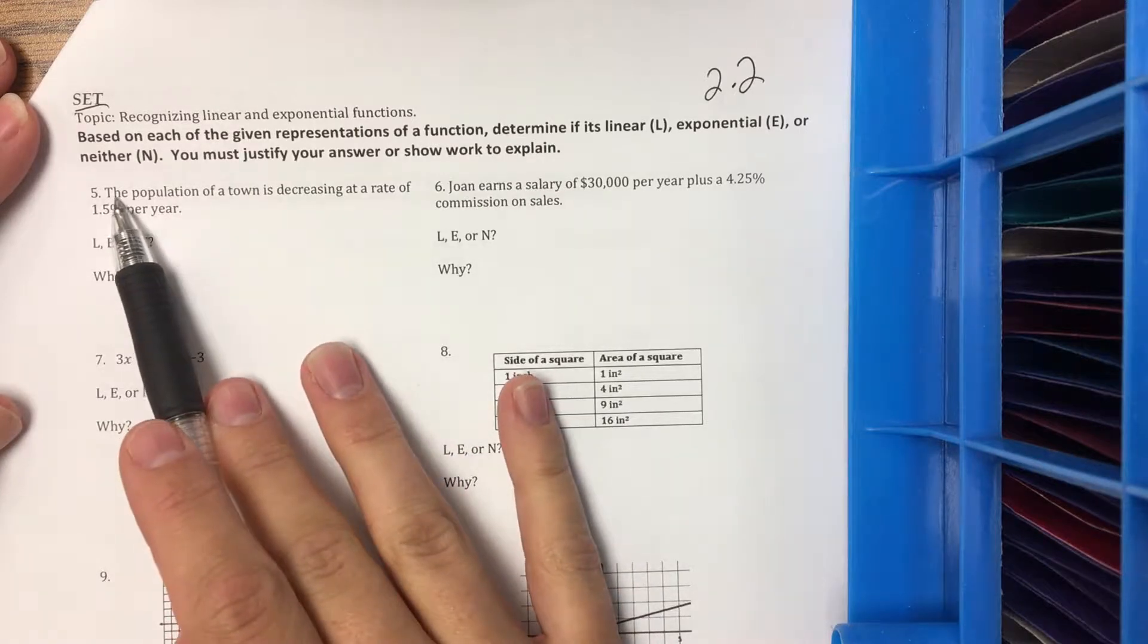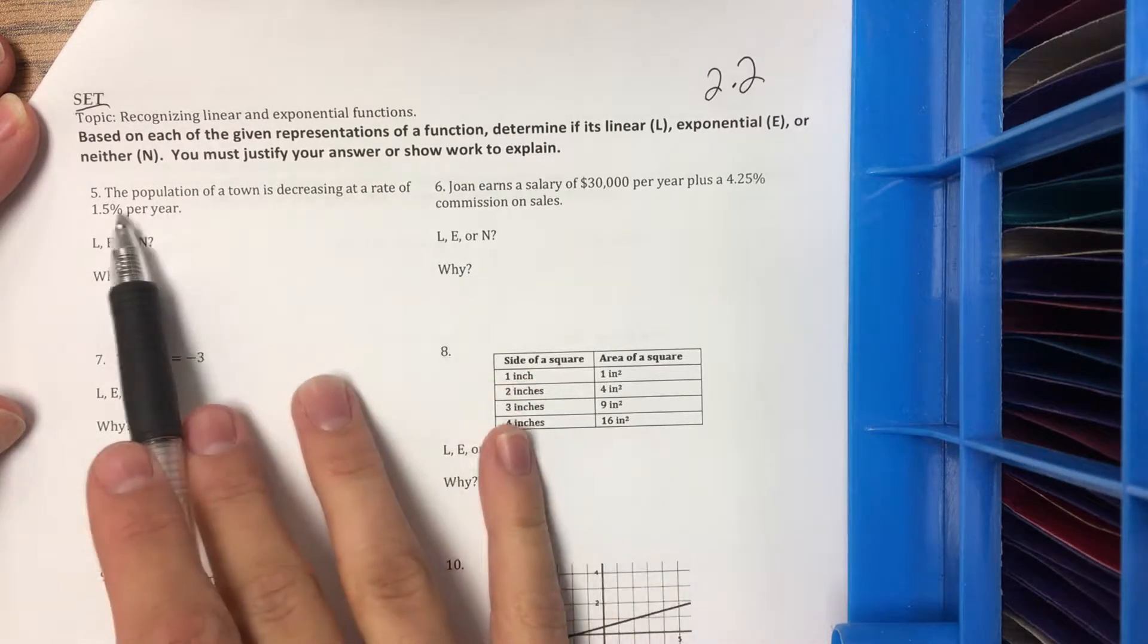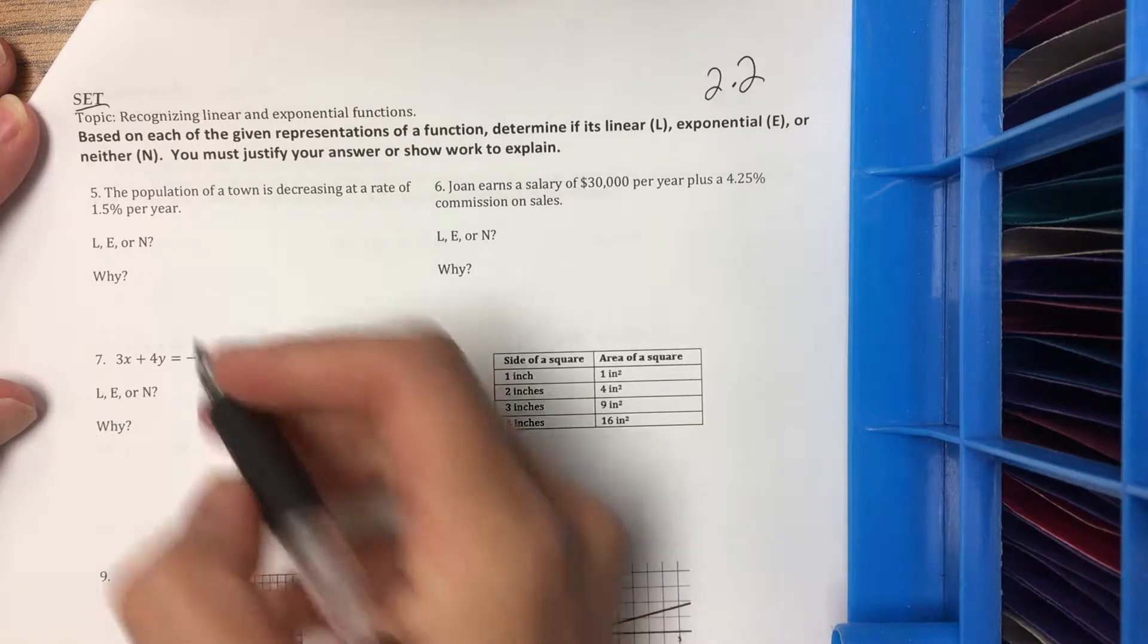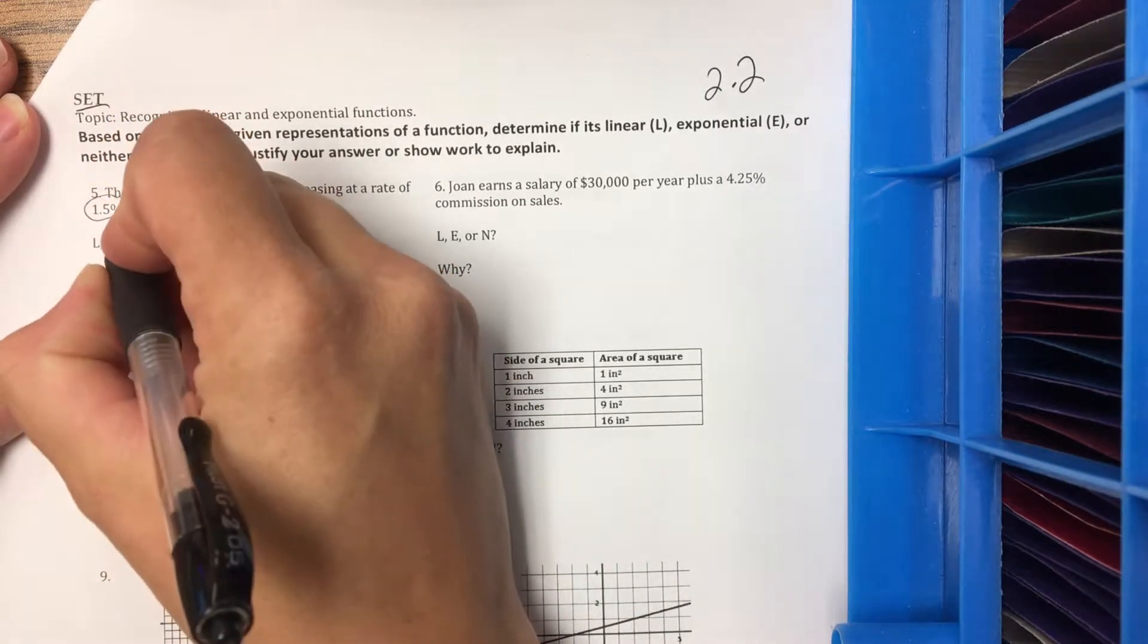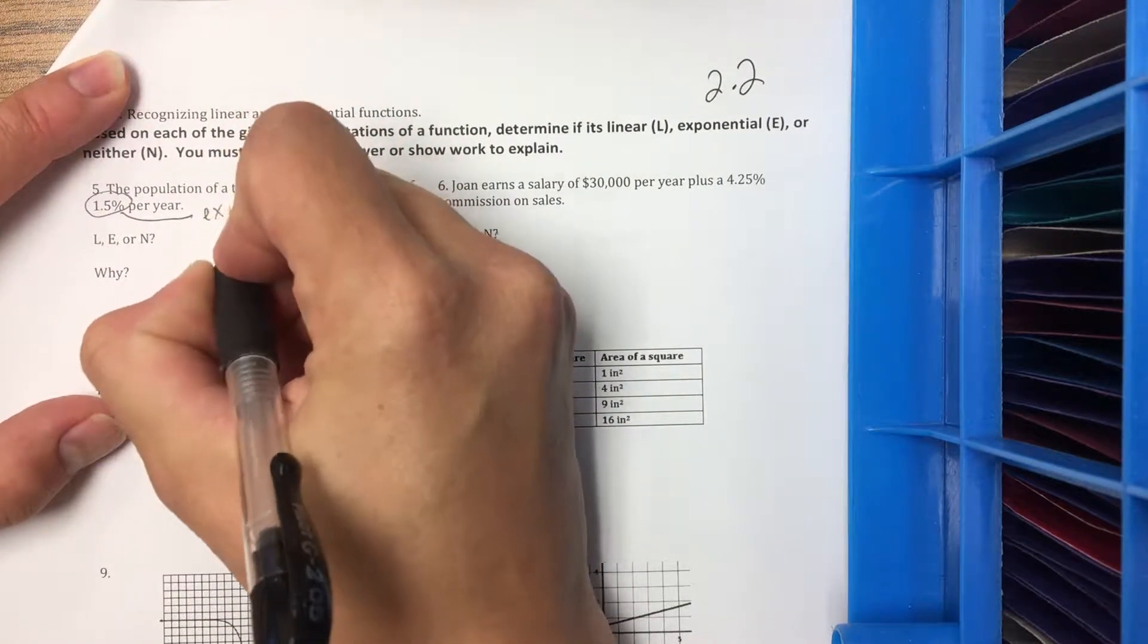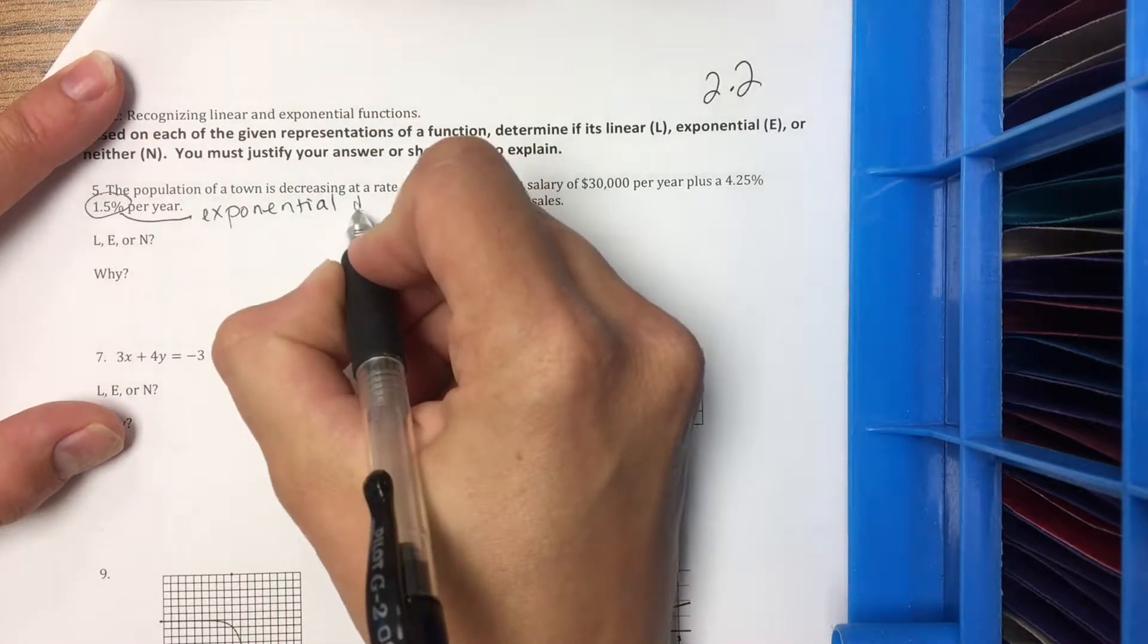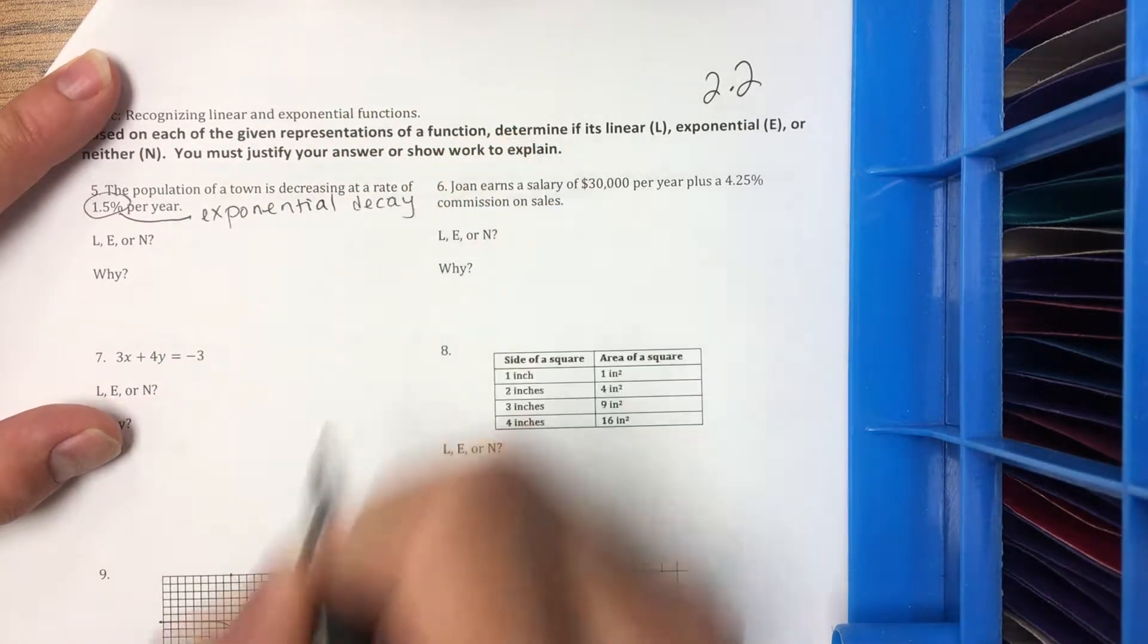So let's look at number 5. The population of a town is decreasing at a rate of 1.5% per year. So whenever we see a percent, we know it's exponential growth or decay. This one we're decreasing, so that would be decay.